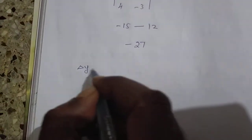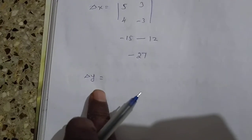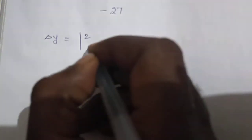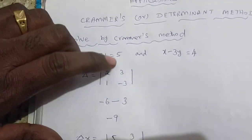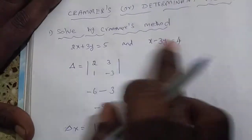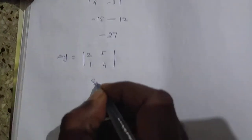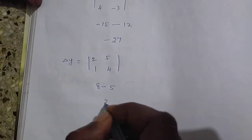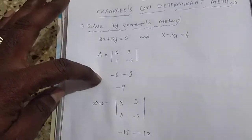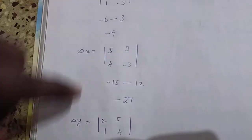Now find delta Y. From delta, you keep the X term coefficients 2 and 1, and you remove the Y column and replace it with the constant terms 5 and 4. Now find the value: 8 minus 5 equals 3. So delta Y equals 3.